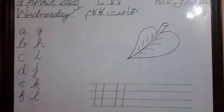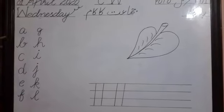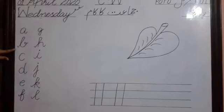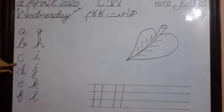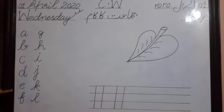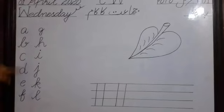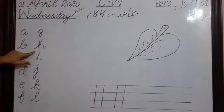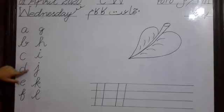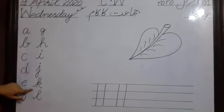First we have revised the previous letters which we have written: A apple, B ball, C carrot, D dog, E elephant, F fish, G goat, H horse, I inkpot, J jug, K kite.